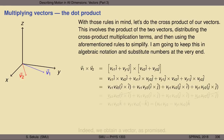Now we apply our rules. The cross product of î with itself is zero, so the first term vanishes. Similarly, ĵ cross ĵ is zero, so the last term vanishes too — we've eliminated two of the four terms. We're left with Vx1·Vy2(î cross ĵ) + Vy1·Vx2(ĵ cross î). Since î cross ĵ equals k̂, and ĵ cross î equals negative k̂, we get: Vx1·Vy2·k̂ + Vy1·Vx2·(−k̂). Order is crucial here — do not swap things around in the cross product without thinking.